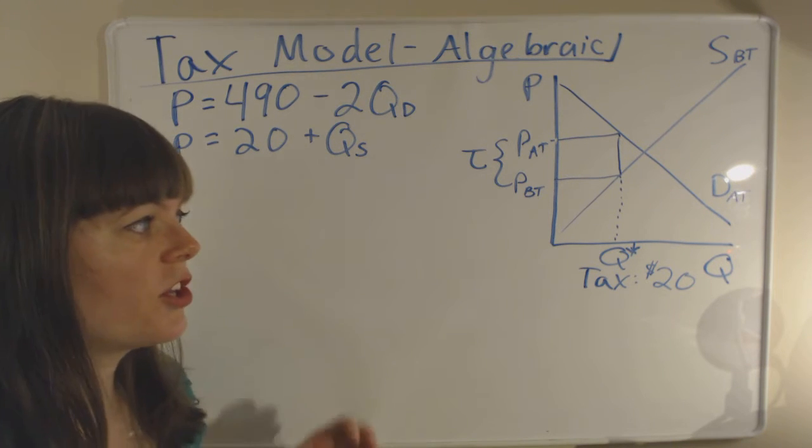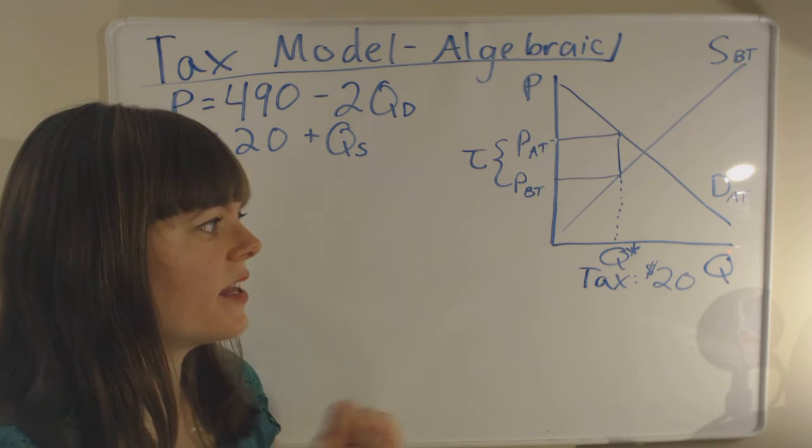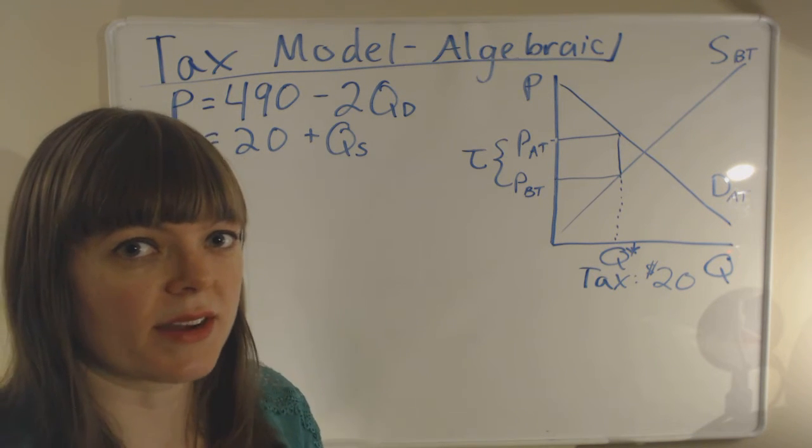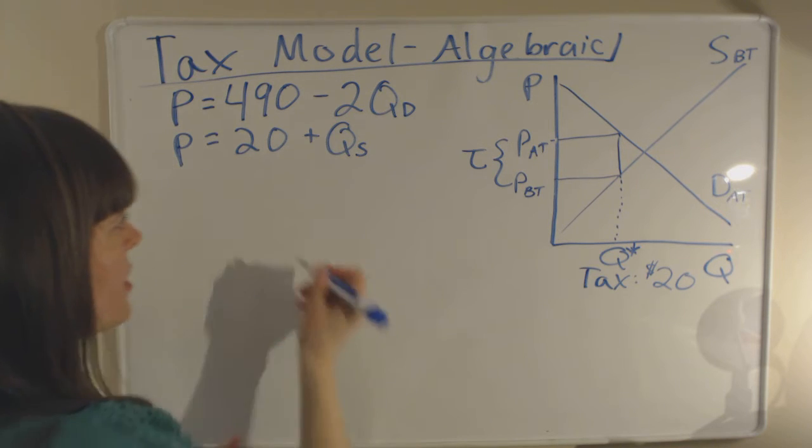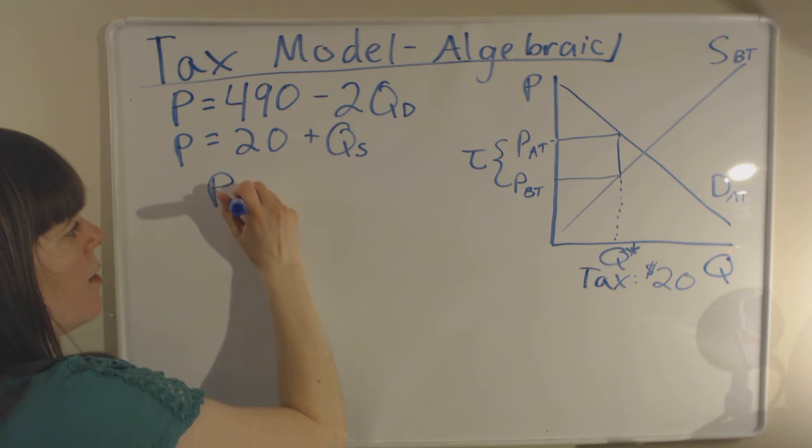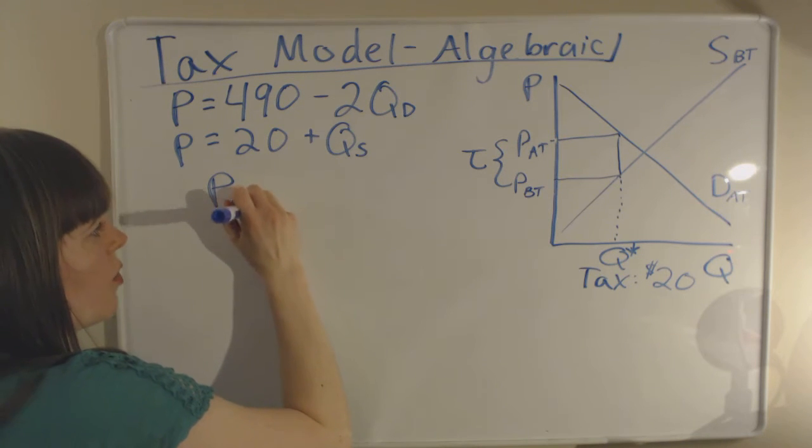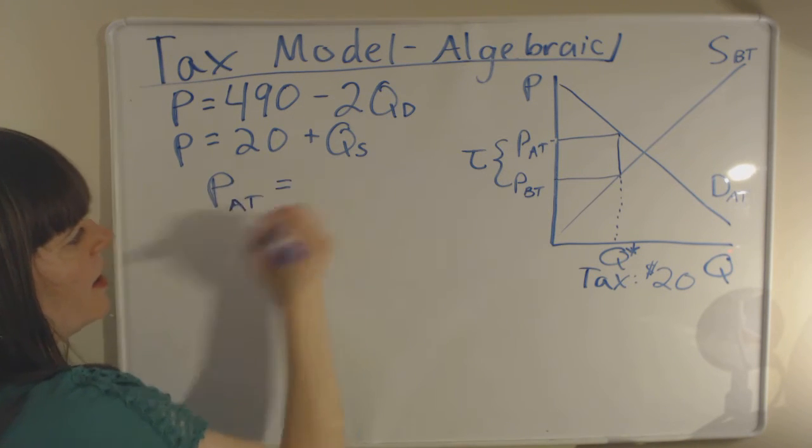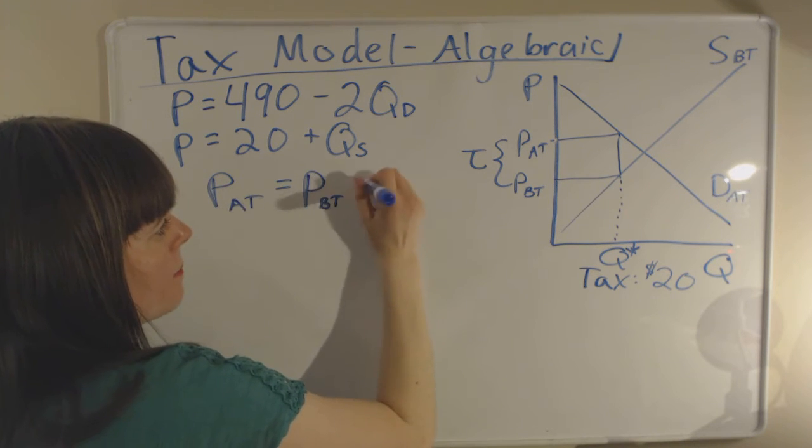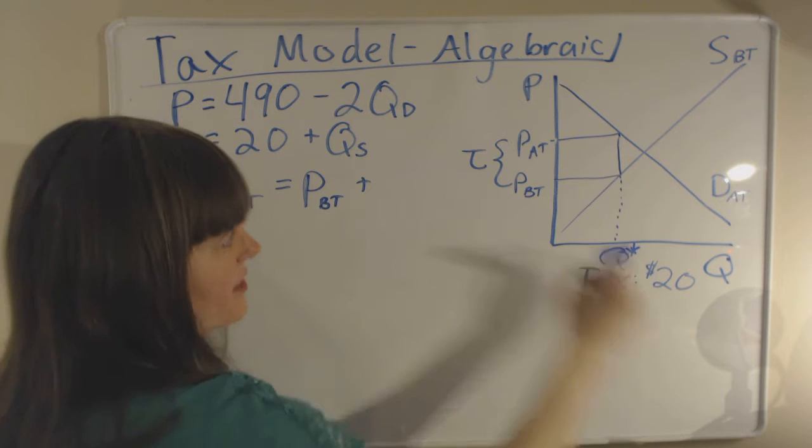So the equilibrium condition used to be, before we had a tax, the equilibrium condition was quantity supplied equals quantity demanded. We're going to have a new equilibrium condition here, and that's going to be the price after tax, or the price demanded, equals the price before tax plus the tax. And in this case, that's 20.